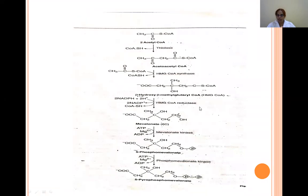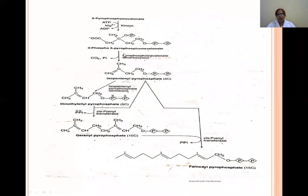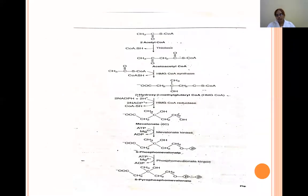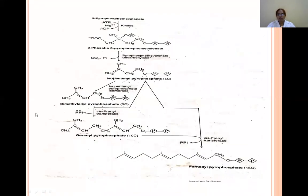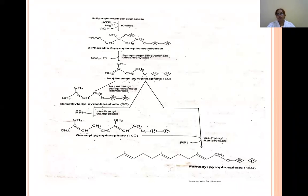HMG-CoA is reduced to mevalonate by HMG-CoA reductase. Mevalonate is then converted to 3-phospho-5-pyrophosphomevalonate by three successive kinase reactions: mevalonate kinase produces 5-phosphomevalonate, a second kinase produces 5-pyrophosphomevalonate, and a third kinase produces 3-phospho-5-pyrophosphomevalonate.